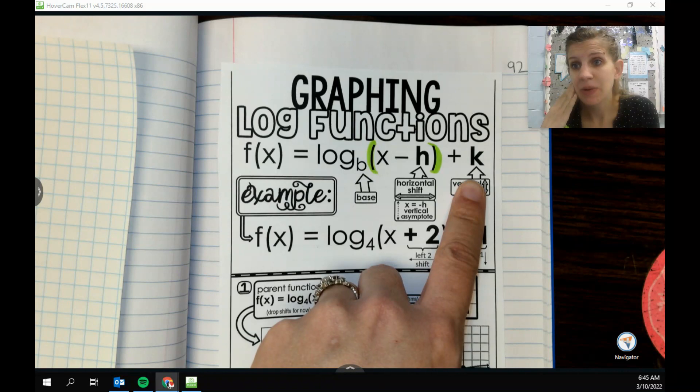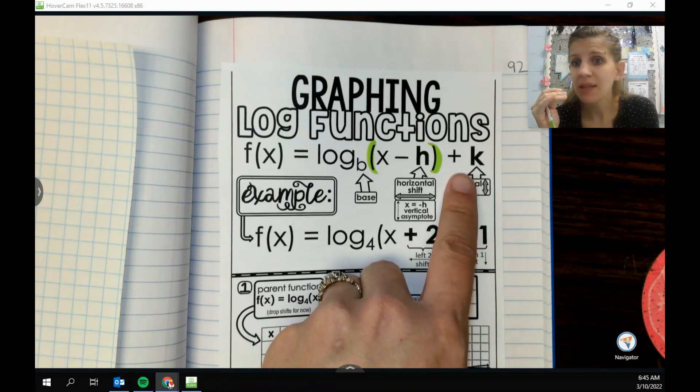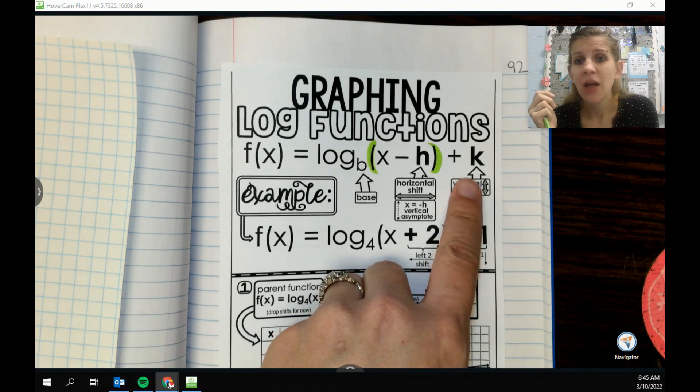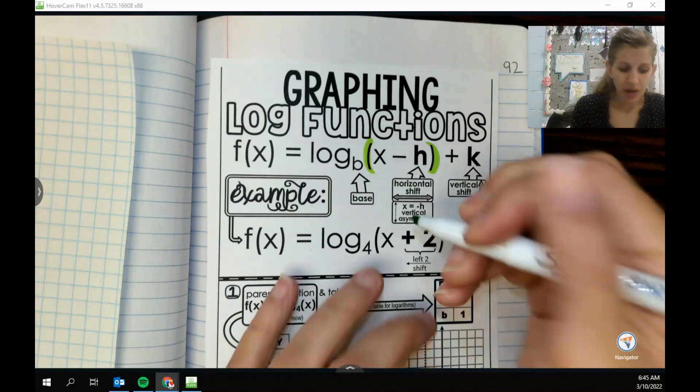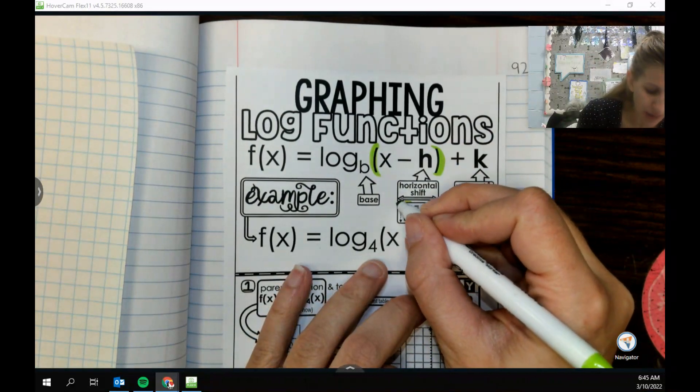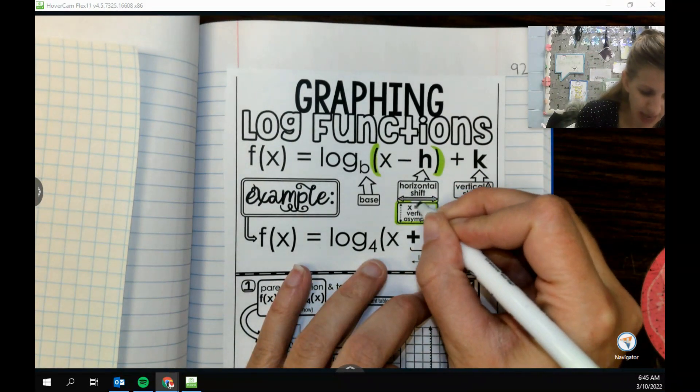So if I see x plus 2, I'm really going to go to negative 2. Or if I see x minus 5, I'm really going to go to positive 5. k on the other hand, if it's not in parentheses, it's your k value. k moves us up and down, and up and down always happens the same way. Now, if you remember when we were doing exponentials, they had an asymptote that was at k. But because everything is swapped for inverses, our asymptote for logarithms is at h.